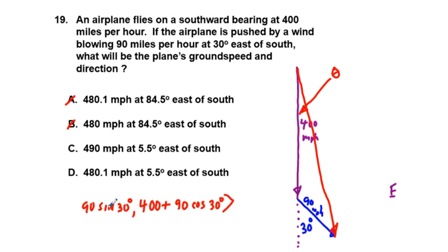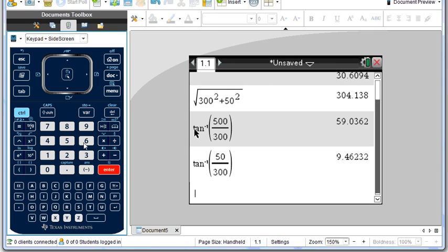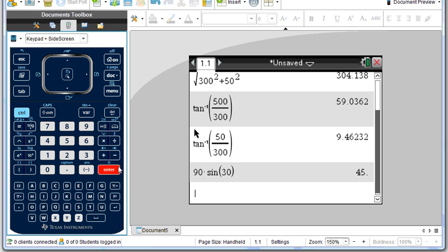So we have 90 times sine of 30 degrees. We should get 45, and we do.